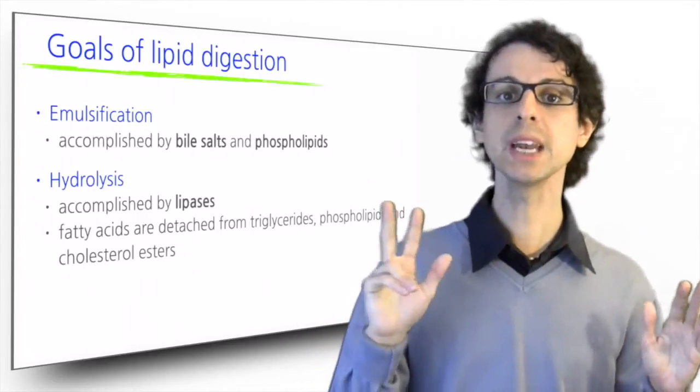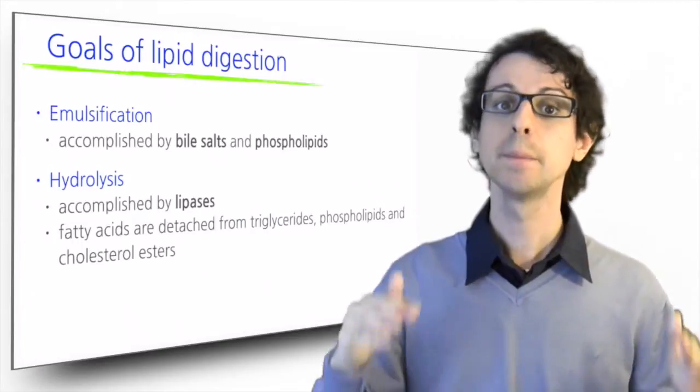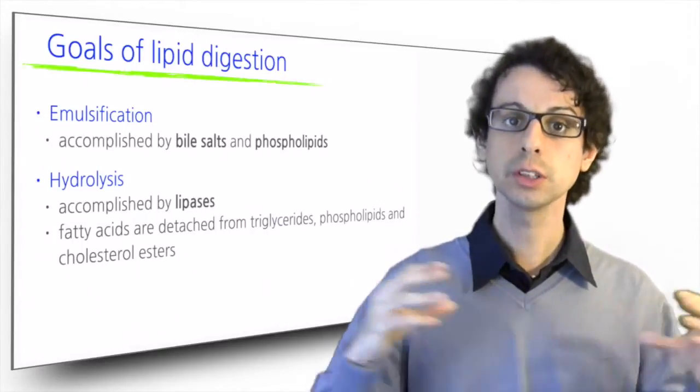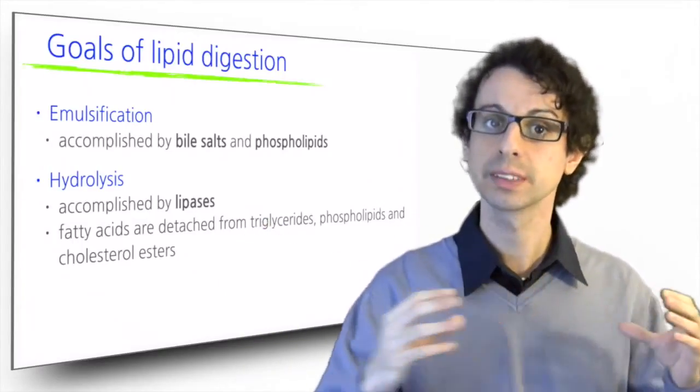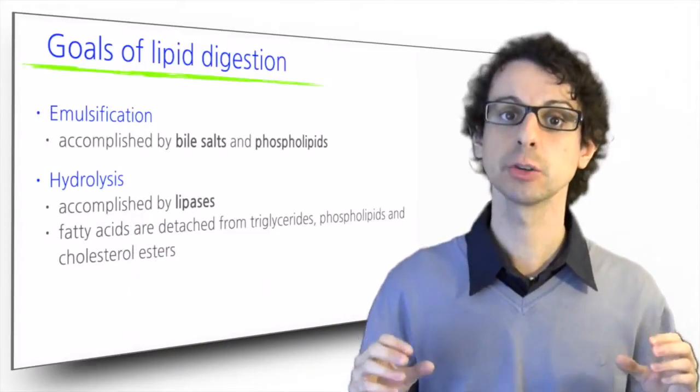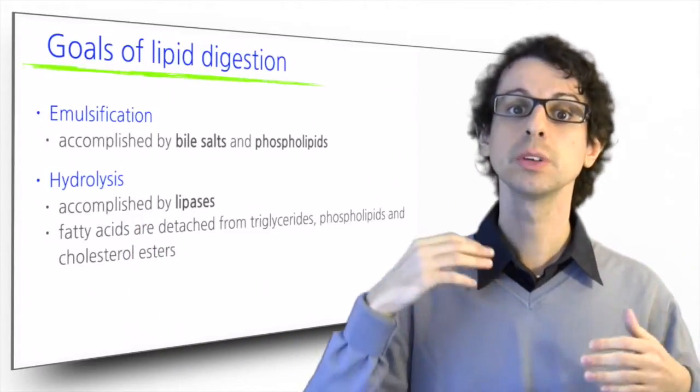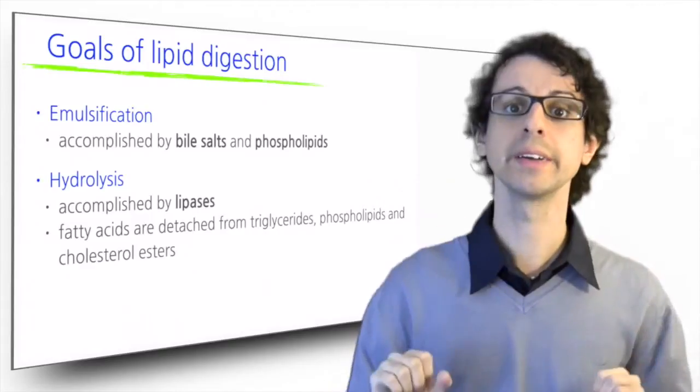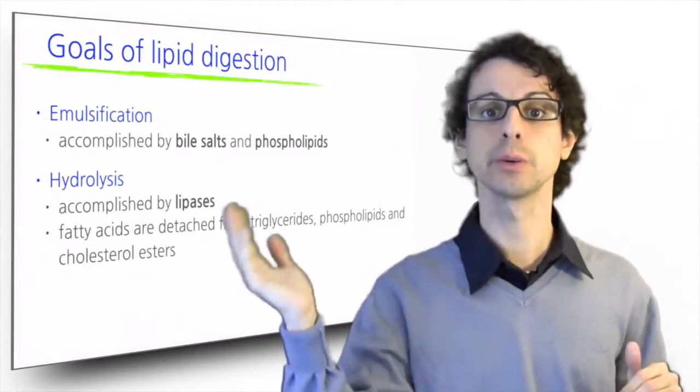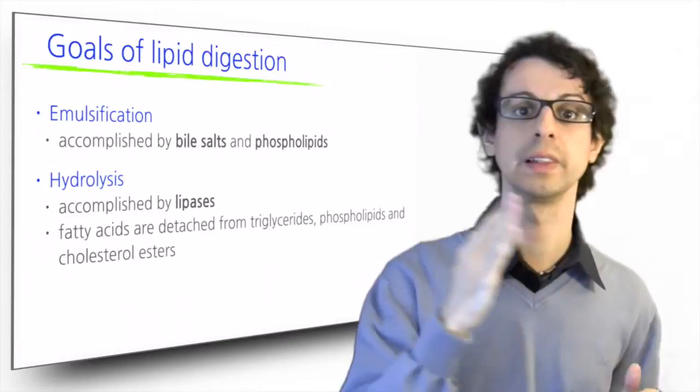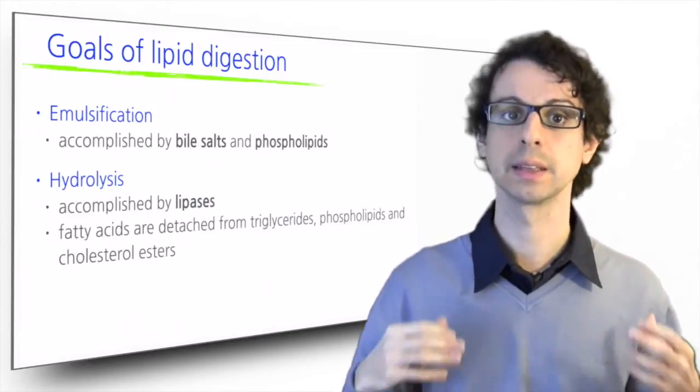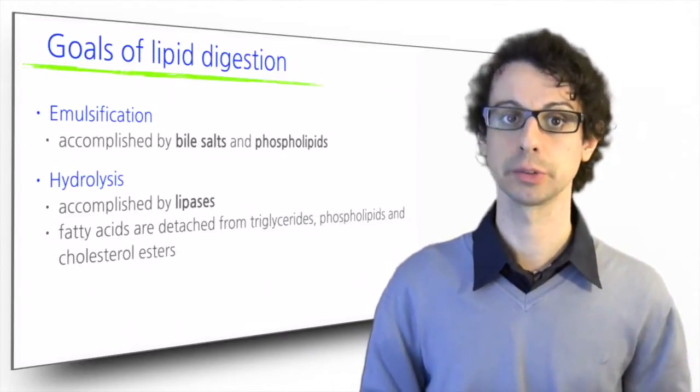There are three main movements in our GI tract. Peristalsis by longitudinal muscle which mostly help move stuff along, segmentation by circular muscle which do a sort of chop chop push very effective in lipid emulsification, and pendular motion which is the movement of our villi, useful to mix enzymes and lipid droplets on the brush border.